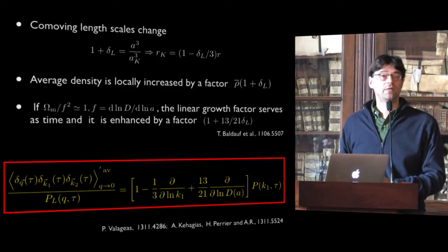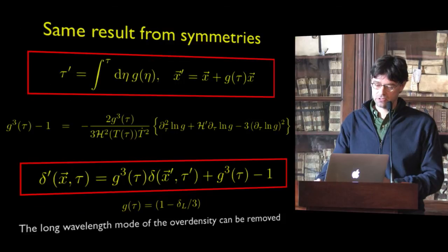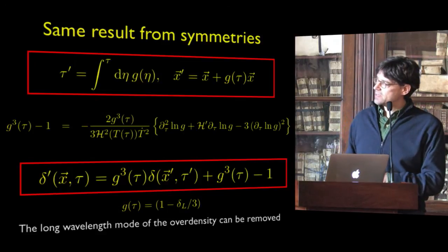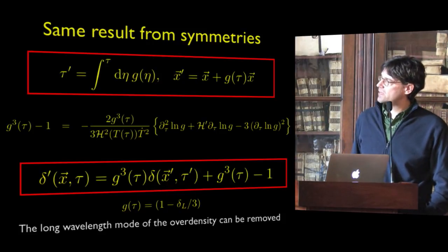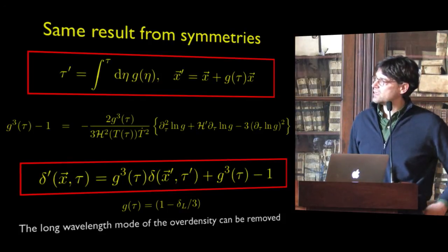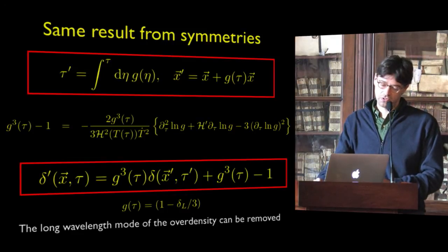These quantities are fully non-linear, so this relation has to be true — otherwise you are breaking one of the assumptions you started from. You can also obtain the same result using again symmetries: according to that symmetry, the density contrast transforms non-linearly, so you can go to a coordinate system where you directly eliminate the long wavelength mode, paying the price of a small curvature.